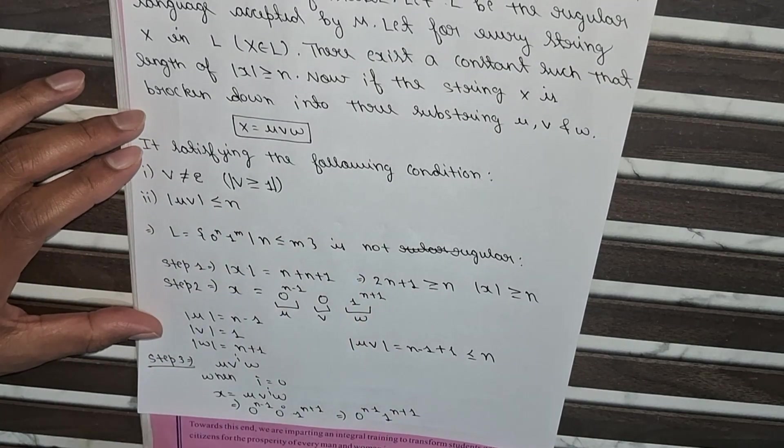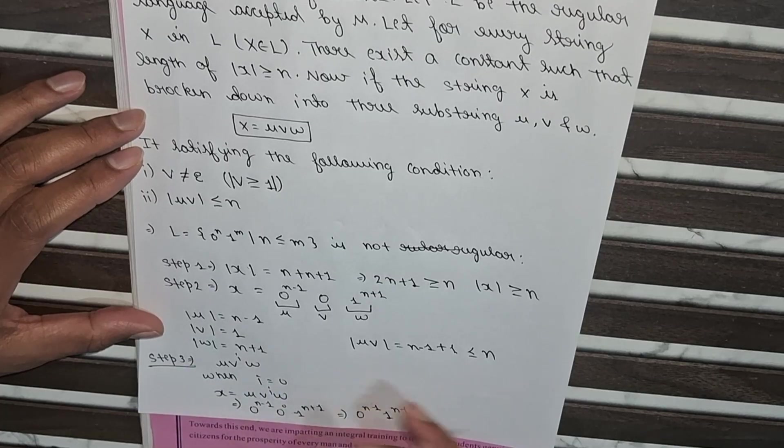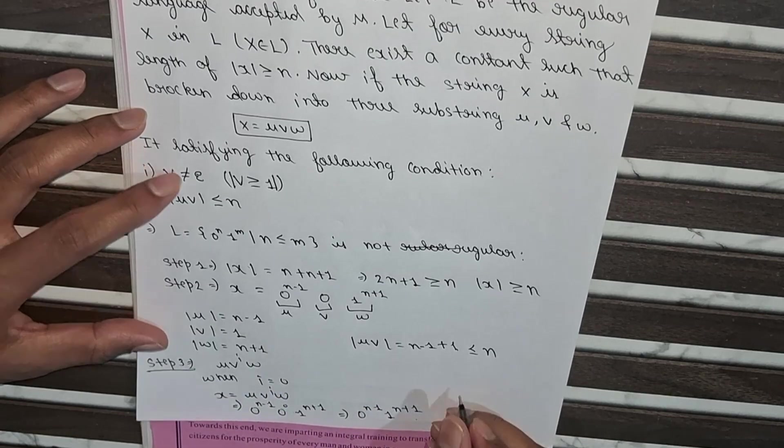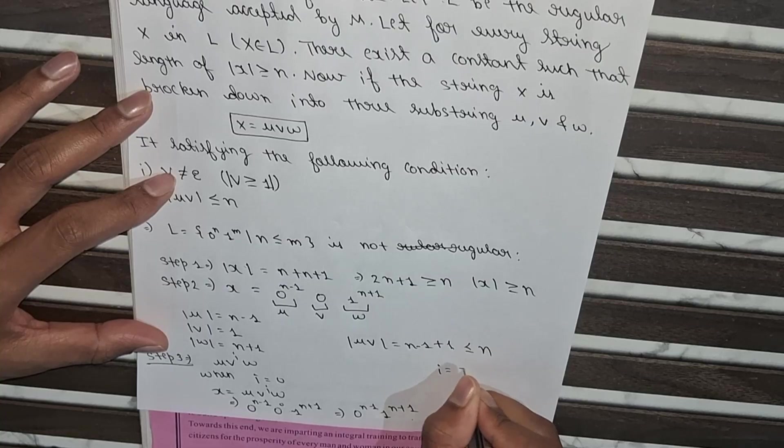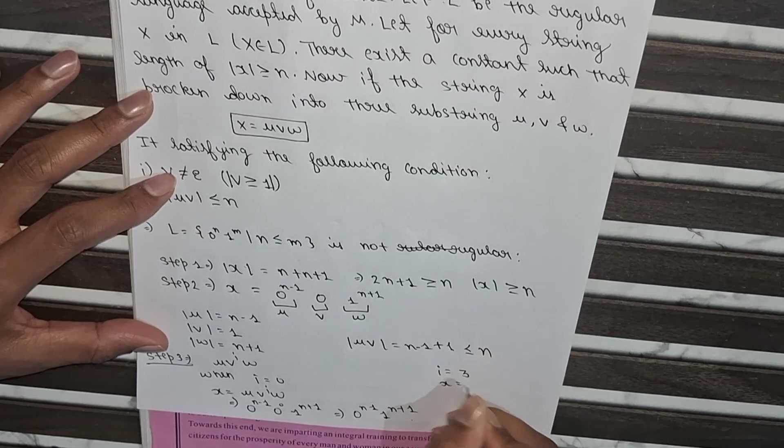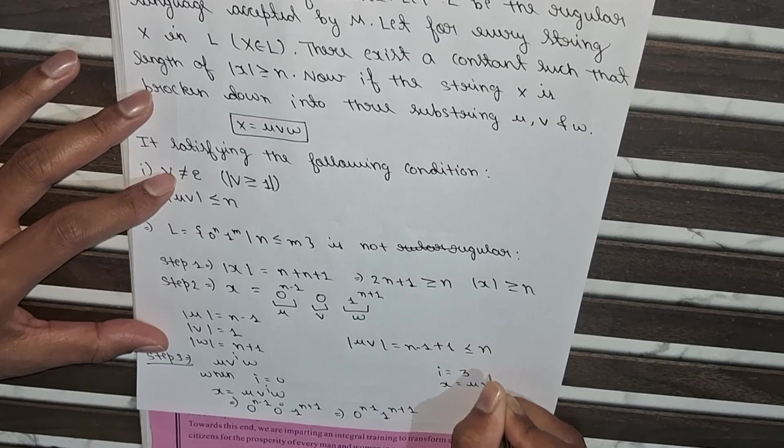So now we will put the value of i differently. So let us put i value equals 3. So x equals uv to the power i w.